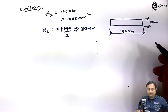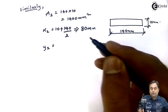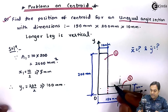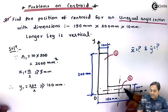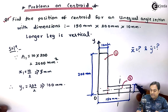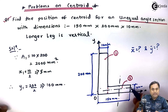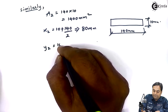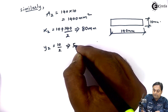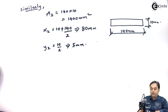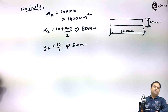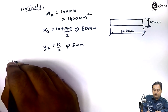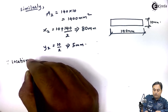y2 is the distance of the x-axis for rectangle 2. That will be exactly at half the height. The height is 10, so the x-axis is at half of 10, giving y2 = 5 mm. After getting these values, we can easily calculate x̄ and ȳ. x̄ is the distance of the centroid with respect to the y-axis.